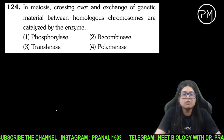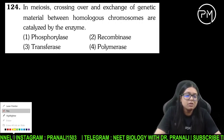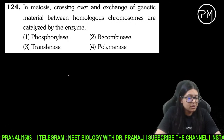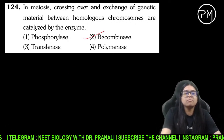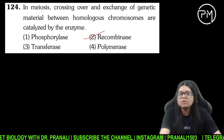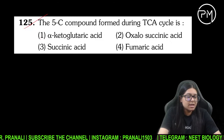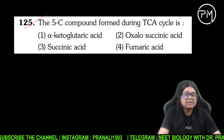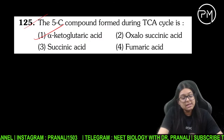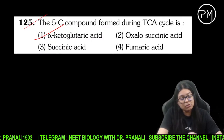Crossing over kis enzyme se hota hai? Crossing over apna pachytene mein ho raha hai, aur recombinase enzyme ki presence mein recombination ho raha hai. Inmein se 5-carbon compound TCA cycle ka kya hai — that is alpha-ketoglutaric acid.